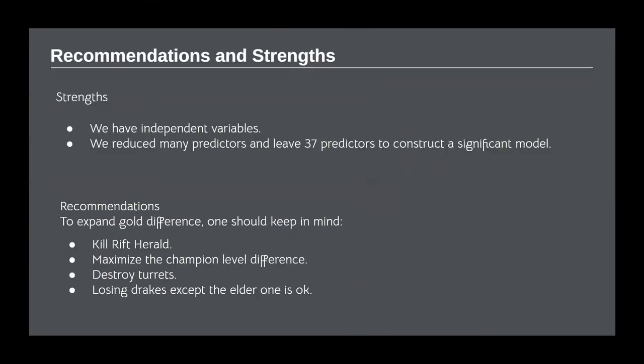So to wrap up our discussion, we believe that our model has several strengths. For example, we have independent variables and we reduce many predictors and leave 37 predictors to construct a significant model. Based on our modeling results, we have the following recommendations: to expand gold difference, killing Rift Herald, maximizing the champion level difference, and destroying turrets are essential factors. And finally, it is okay to lose dragons, except the elder ones.